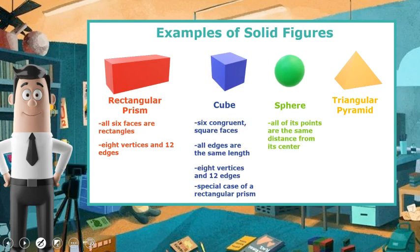Then we have spheres. All of its points are the same distance from its center. And we have triangular pyramids. Square bases, four triangular faces with a common vertex. They have five vertices and eight edges.